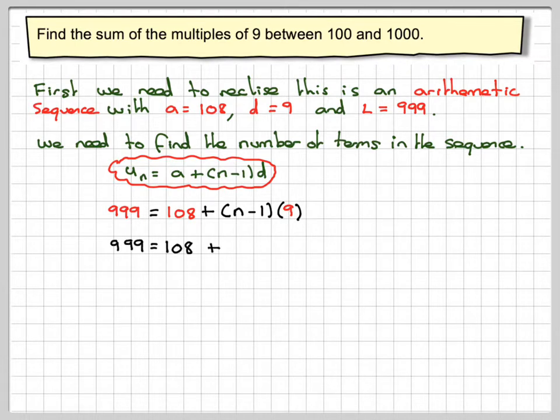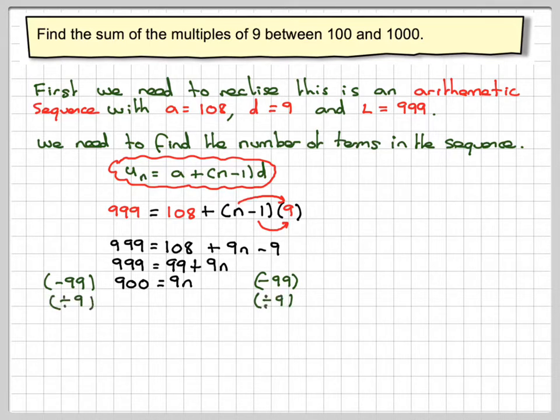So expanding this bracket, we're going to get 9n minus 9. 108 minus 9 is going to give me 99. That's 9n, taking away 99 from both sides. We're going to have that 9n is equal to 900. Dividing by 9 on both sides, we've got that n is equal to 100. So there are 100 terms.